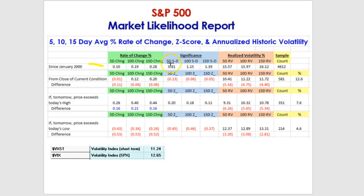Now, let's take a look at the current market condition — here we're looking at 581 occurrences, including the two most recent ones. On average, the five-day rate of change was actually down 0.01% — down a hundredth of a percent — instead of up a tenth.